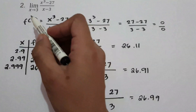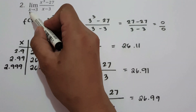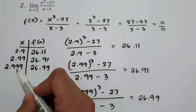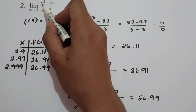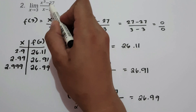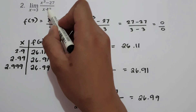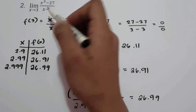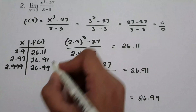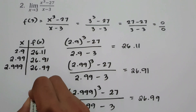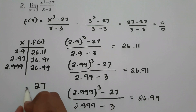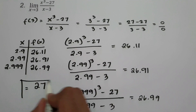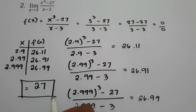Notice that as x approaches 3, the expression x cubed minus 27 all over x minus 3 approaches 27. So 27 will be the value of the given limit.